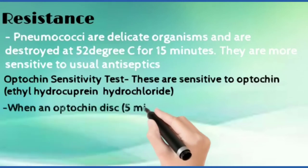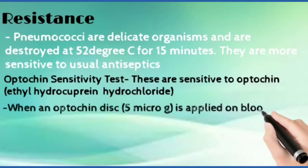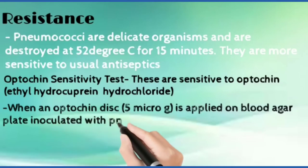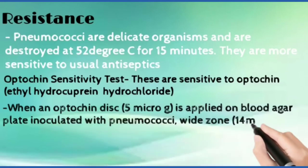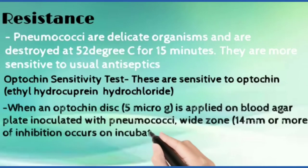An optochin sensitivity test is done for this. When an optochin disc of 5 micrograms is applied on blood agar plate inoculated with pneumococci, a wide zone of inhibition occurs on incubation.